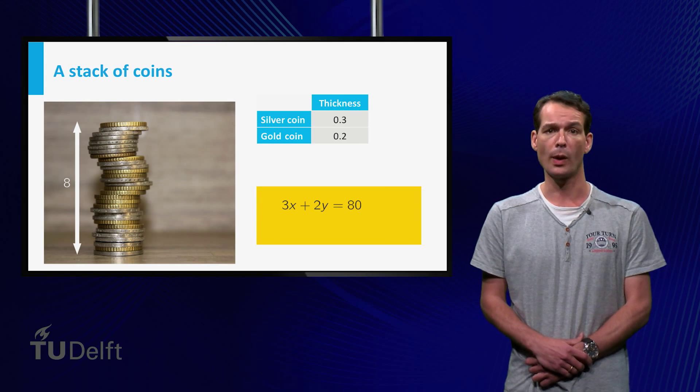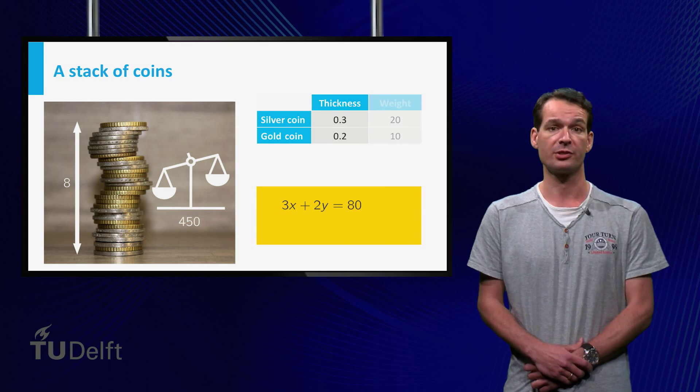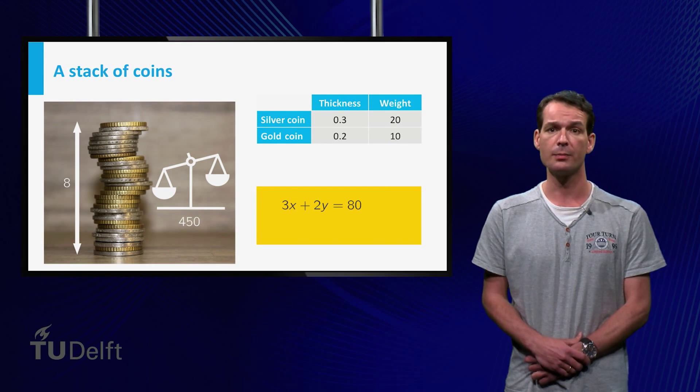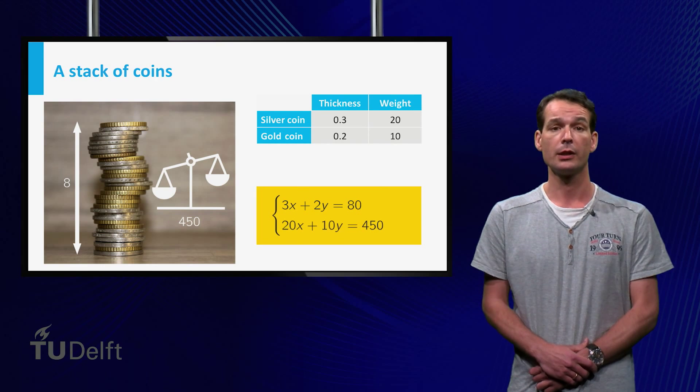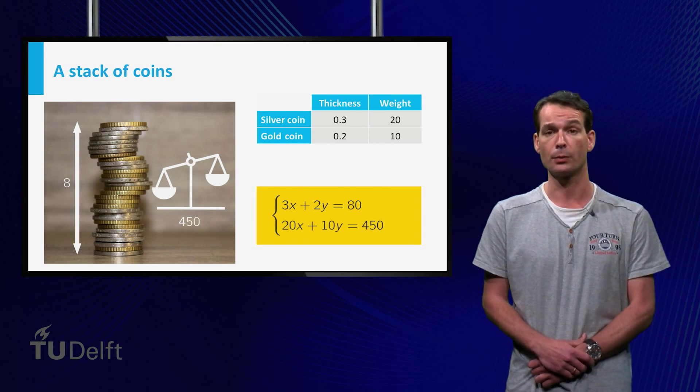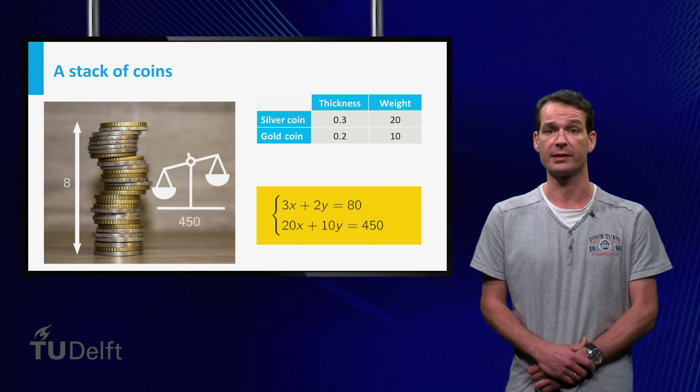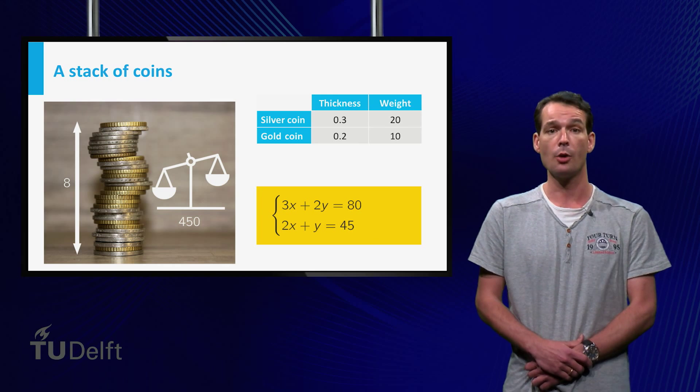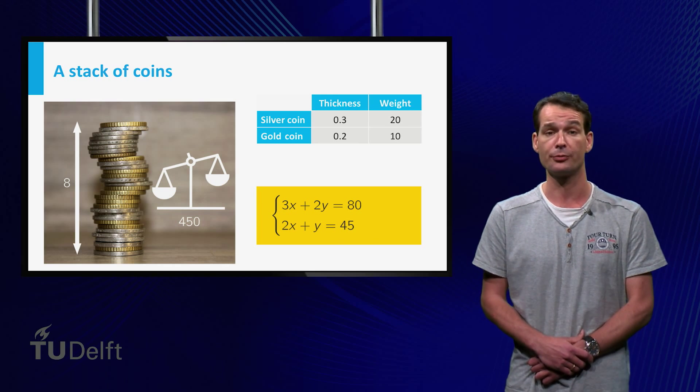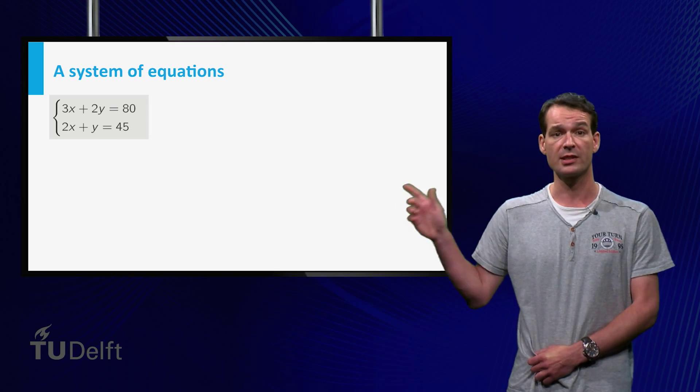We also weighted the coins, and the weight of the stack is 450 grams. Now a silver coin weighs 20 grams and a gold coin weighs 10 grams, so we have the equation 20x plus 10y equals 450. In this case we divide by 10 to make the equation look nicer. The question is of course, how many silver and how many gold coins have we got here? The answer is obtained by solving this system of equations.